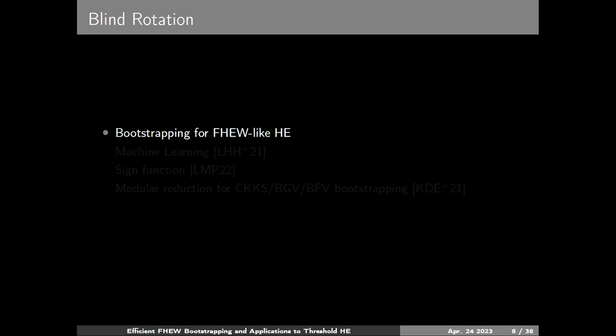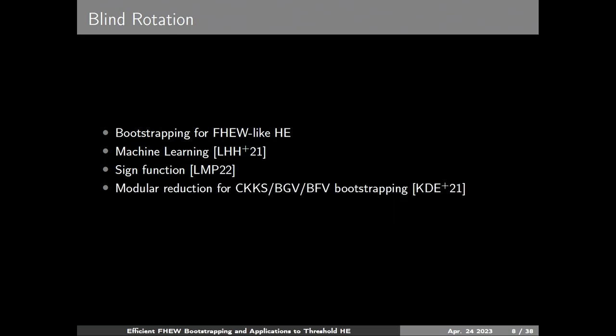Usage of blind rotation is not just limited to bootstrapping of FHE-like homomorphic encryption. It is widely used in homomorphic encryption for non-arithmetic operations — for example, machine learning algorithms, or accurate sign function computation.